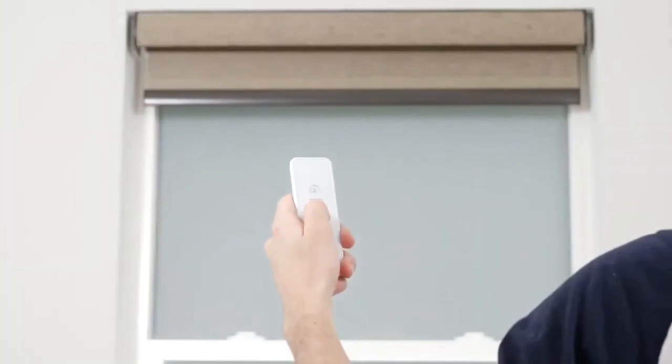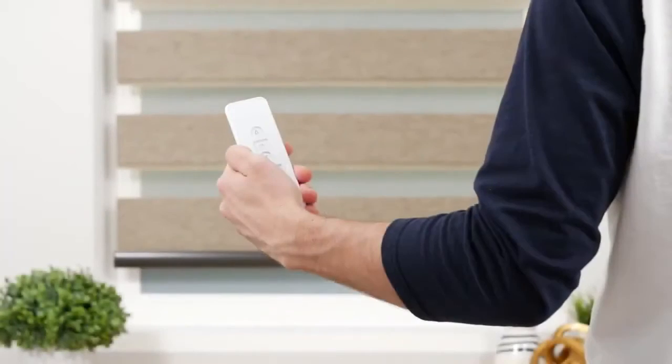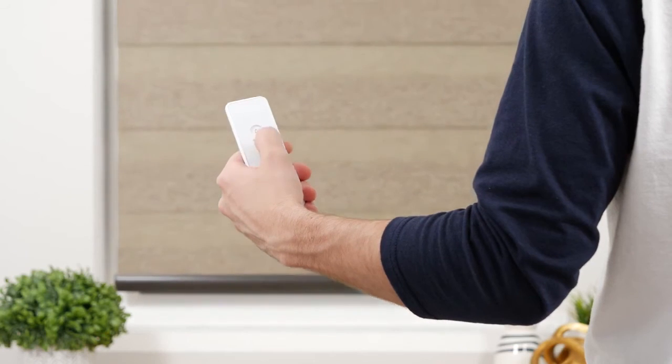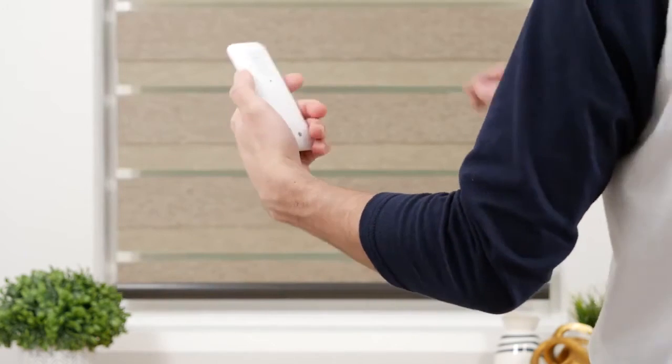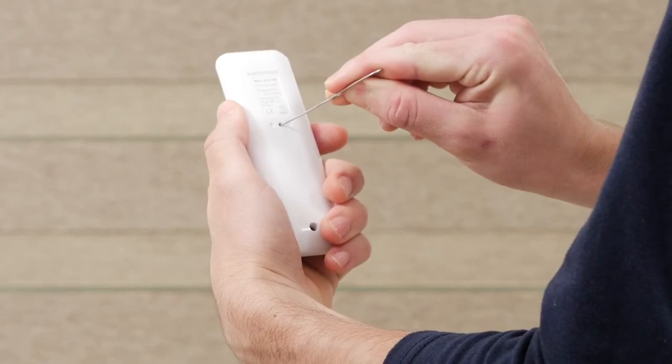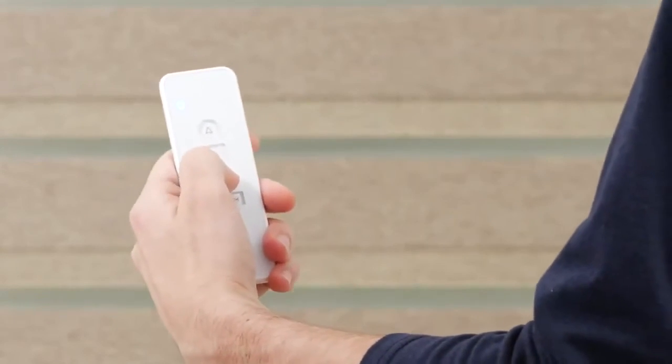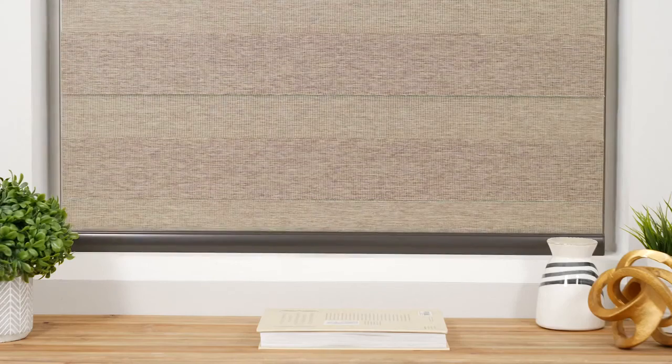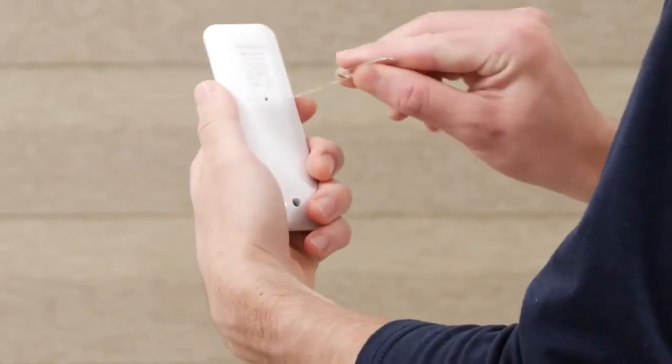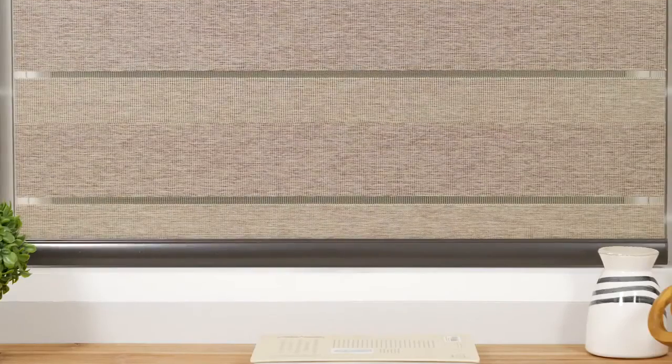To set a new bottom limit, position the shade about six inches above the desired lower limit. Press the program button on the back of your remote until the shade jogs. Then tap the down button repeatedly until the shade is set at the new bottom position. Press the program button again and the shade will jog to confirm that the lower limit is saved.